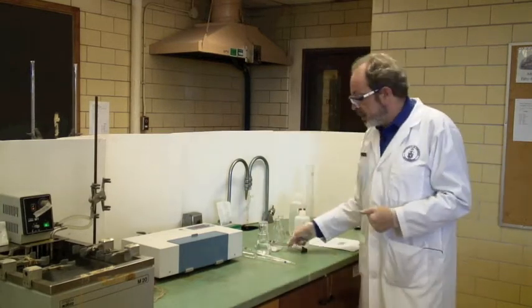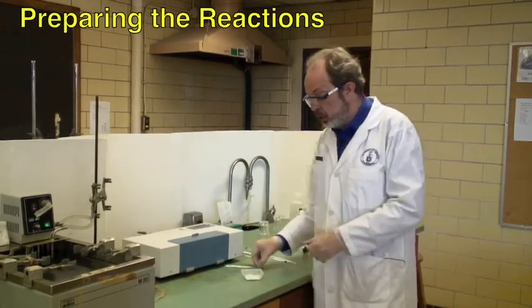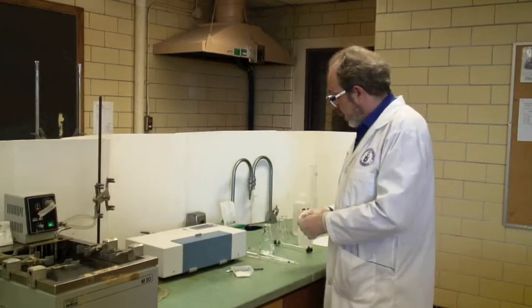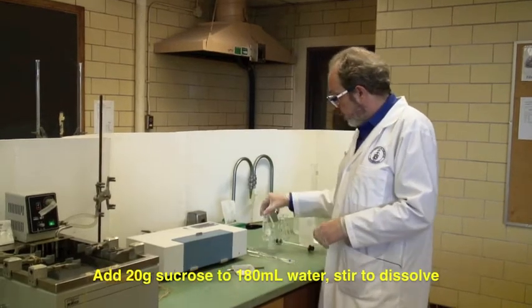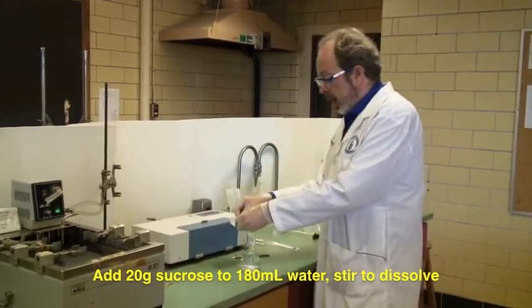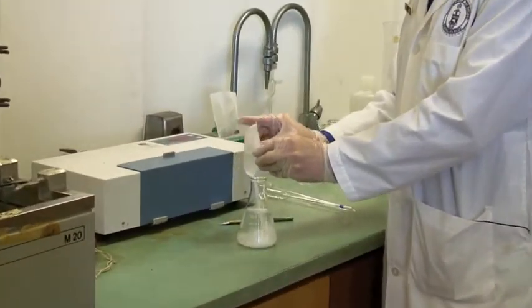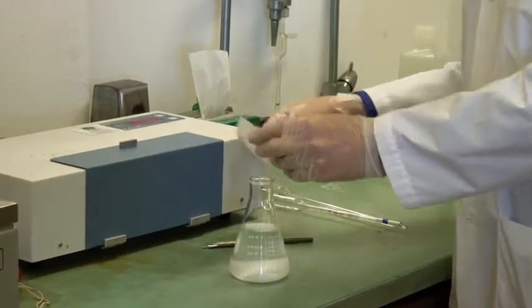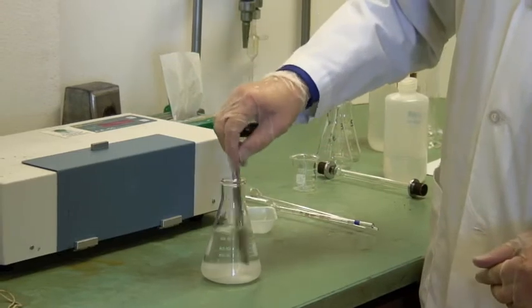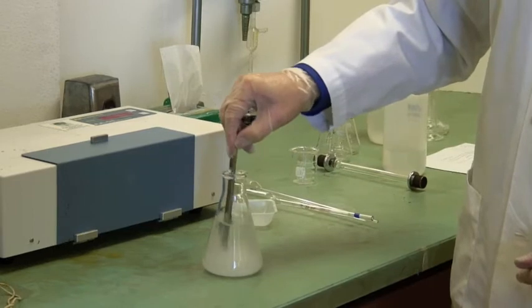The reactant today is just plain table sugar. You'll need to weigh out about 20 grams of it and place it in water, about 180 mils of it, and add the sugar to it. This is going to make a syrup. It doesn't really matter if you get it all there or not, you're going to be measuring it later on. Let's stir this up until it's dissolved.